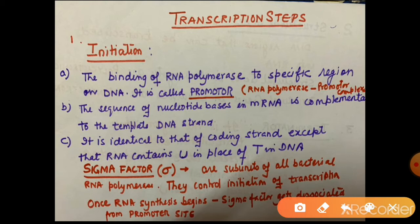Now we are starting the transcription process in detail. The process has three steps: first step is initiation, second is elongation, and third is termination. In initiation, RNA polymerase binds to the promoter region - the left-hand side of the transcription unit where the process starts. RNA polymerase binds to the promoter and forms an RNA polymerase-promoter complex.